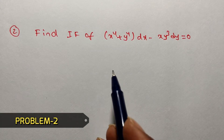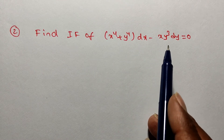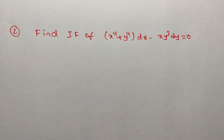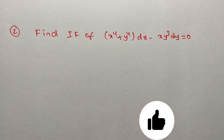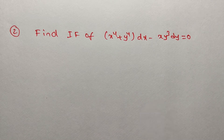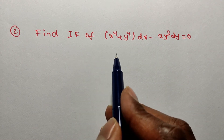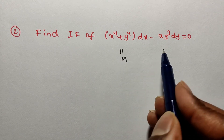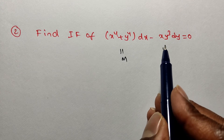Now I am going to solve the second problem. The given problem is: find the integrating factor of x to the power 4 plus y to the power 4 dx minus xy cubed dy equals 0. Remember, friends, generally in the GATE exam or any competitive exams, they will give find integrating factor or find the general solution of M dx plus N dy equals 0. So this is very useful.